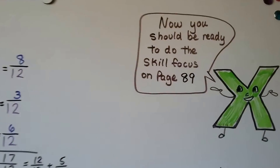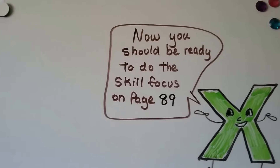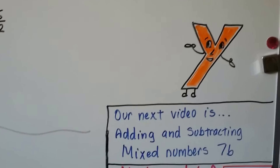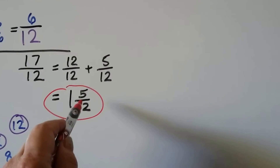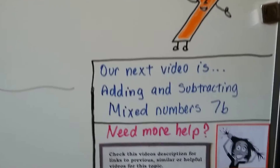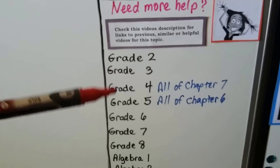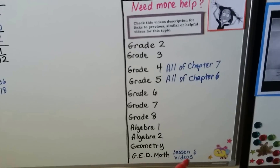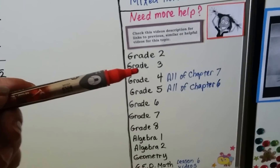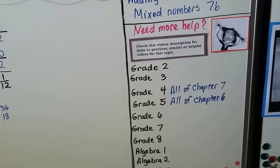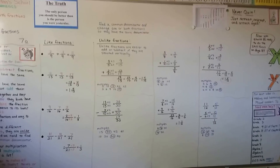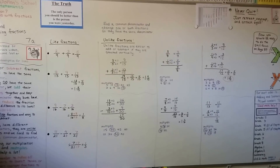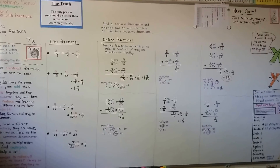I hope that made sense. You should now be ready to do the skill focus on page 89. Our next video is going to be adding and subtracting mixed numbers — a whole number with a fraction. If you need more help, there are links in the description to lesson 6 and to grade 4 and grade 5 math for adding and subtracting fractions. I hope you're having a great day — don't quit if it starts getting too hard, just retreat and regroup and try again. I believe in you, see you next video!